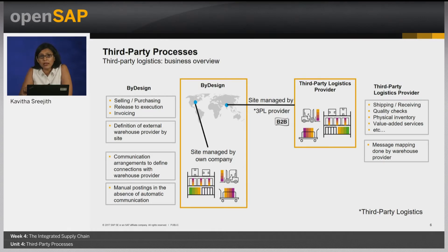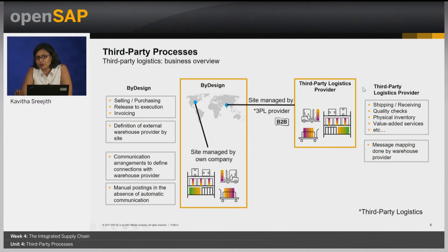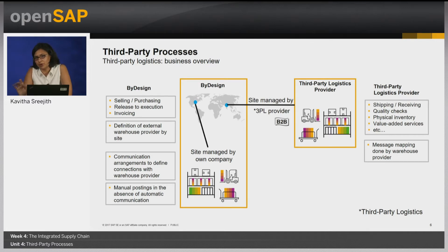Note that in the absence of, or failure of, automatic communication — which may be due to unforeseen circumstances such as systems going down — a manual option is available to create the inbound and outbound delivery. On the third party logistics provider site, the mapping of the interfaces used for message communication must be taken care of by the warehouse provider.